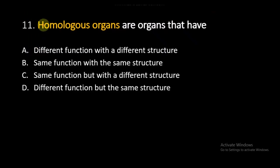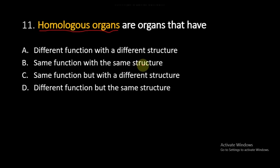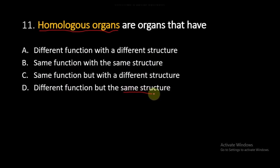Question number 11: Homologous organs are organs that have — Option A: different function with a different structure, Option B: same function with the same structure, Option C: same function but with a different structure, Option D: different function but the same structure. Homologous organs are the organs which have the same structure but they perform different types of functions.